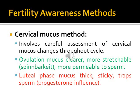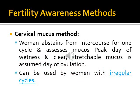The cervical mucus method: the woman assesses cervical mucus throughout the cycle. Around ovulation, mucus becomes clear, more stretchable, and more favorable to sperm. After ovulation in the luteal phase, mucus becomes thick and sticky. The woman abstains for one cycle to identify the peak day of wetness and regards it as the day of ovulation. In the next cycle, she stops intercourse five days before ovulation and resumes one day after ovulation. This method can be used even in women with irregular cycles.